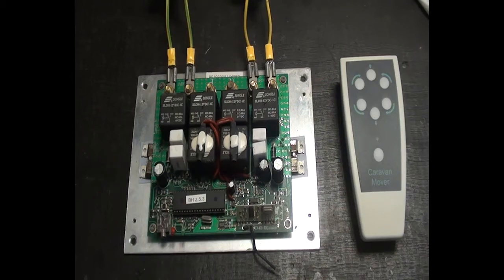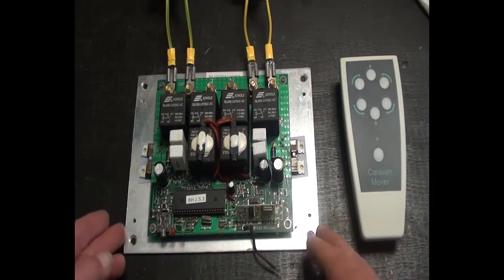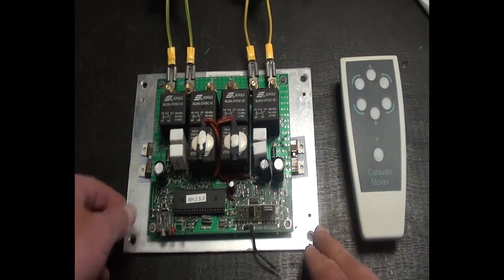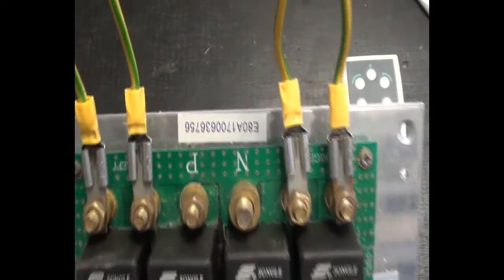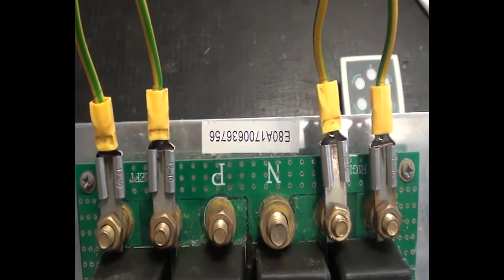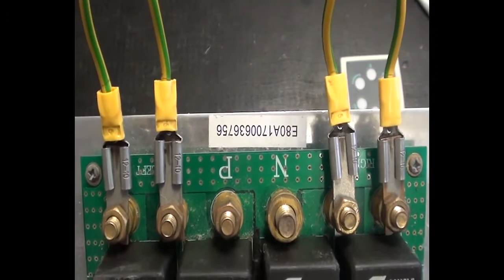This video will take you through the steps of setting up the universal remote control to the power touch style of motor mover. This particular motor mover is an E spec and we can tell that because the serial number is preceded with the letter E.